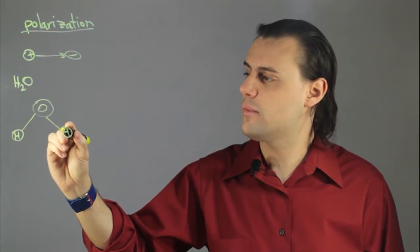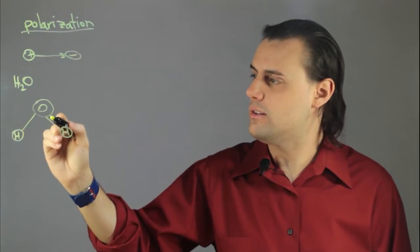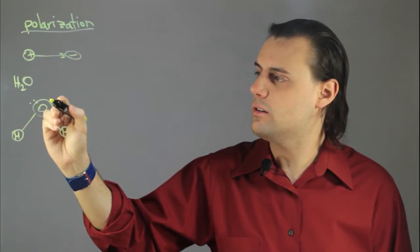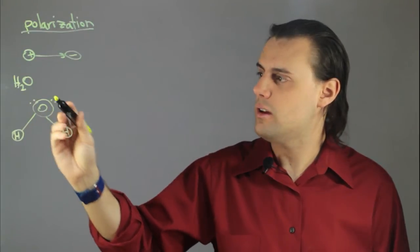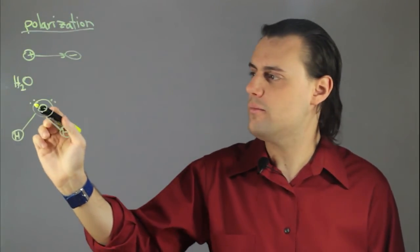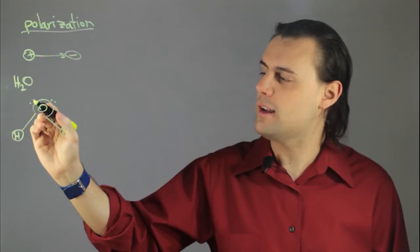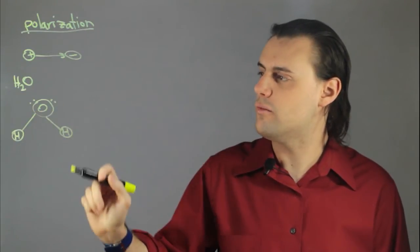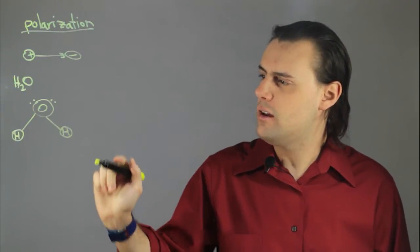and it's at this angle because there are two pairs of electrons in the outer shell of the oxygen atom, and the electromagnetic repulsion forces these two bonds to kind of bend down like this. But we...